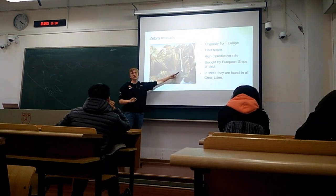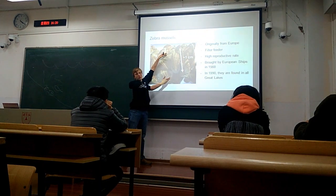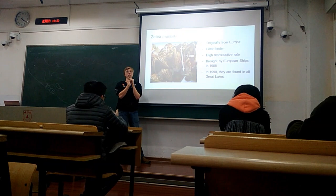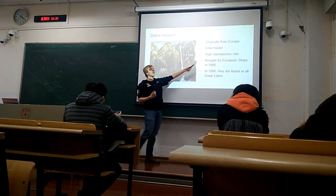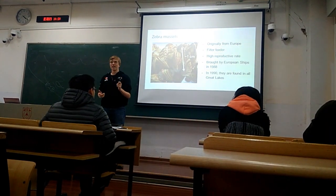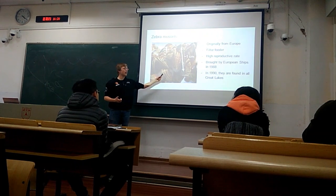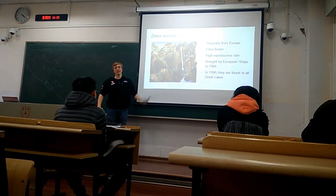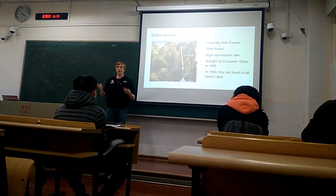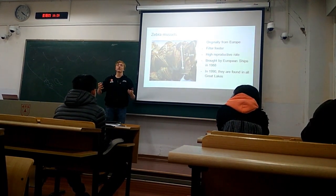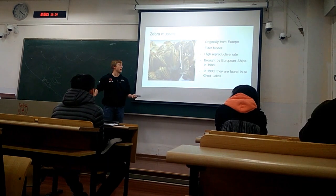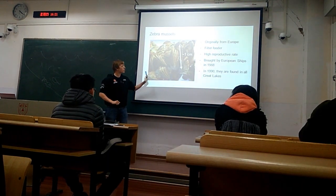These are very small animals — only about one centimeter, roughly the size of your thumbnail. They're very small, but they have a very high reproductive rate, meaning they lay very, very many eggs. In fact, one adult female can lay up to one million eggs every year. Of course not all eggs survive, but that means there's very large growth potential — they can produce many offspring very fast. They are originally from Europe.